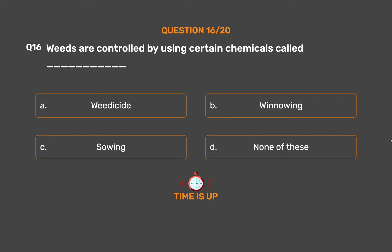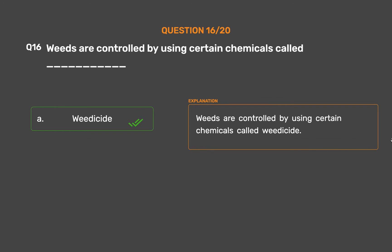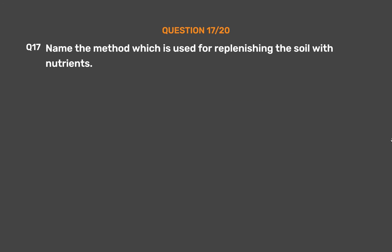The correct answer is Option A: Weedicide. Weeds are controlled by using certain chemicals called weedicide.